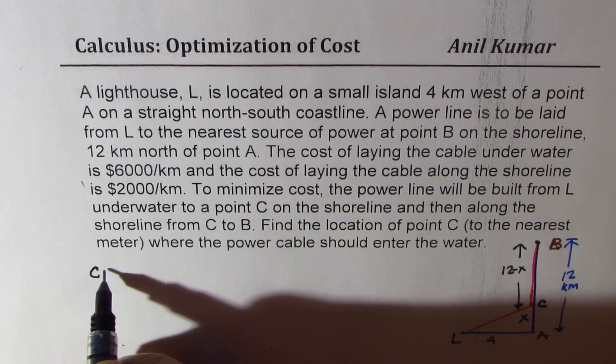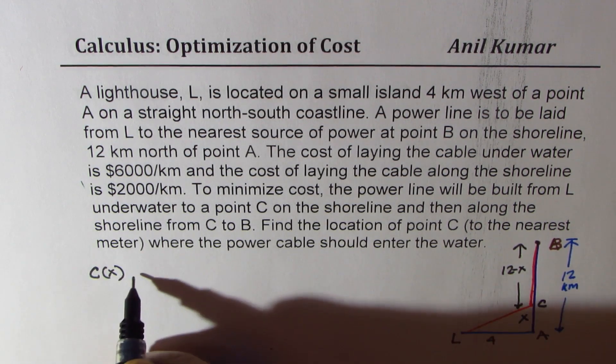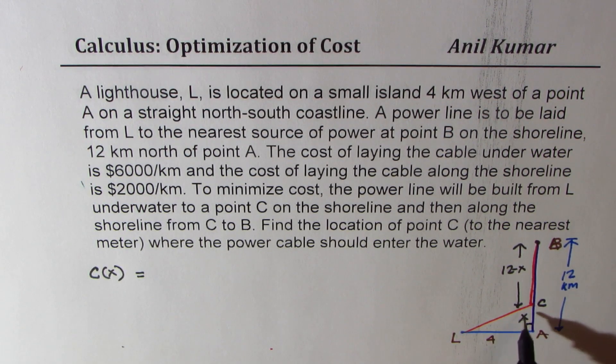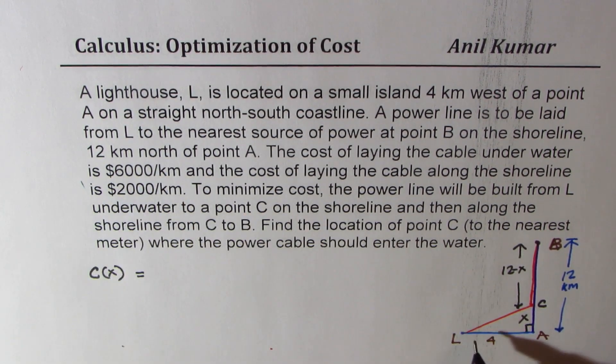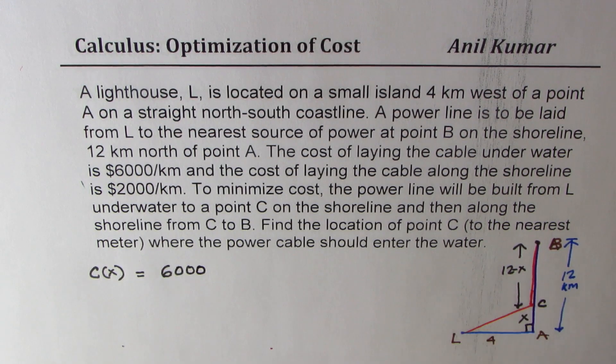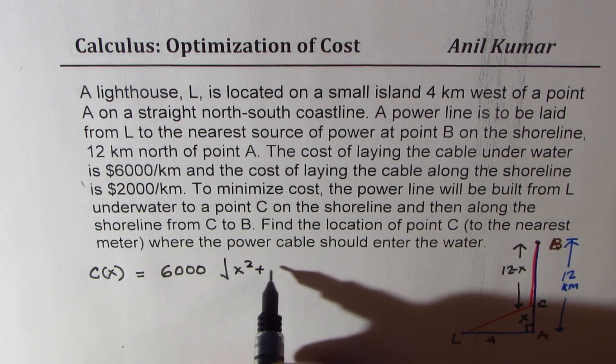We can write cost as per the distance of cable. This distance L to C using Pythagorean theorem could be written as square root of 4 square plus x square. And $6,000 is the cost for laying in the water. So it is rate 6,000 and the distance here is square root of x square plus 4 square.